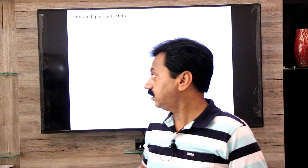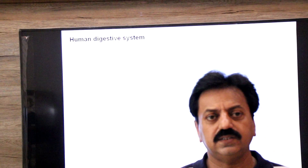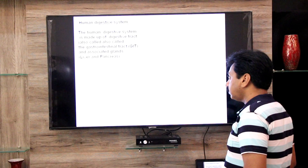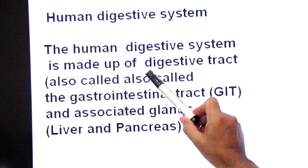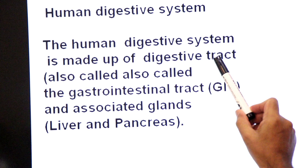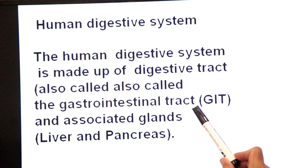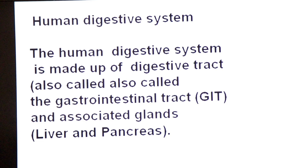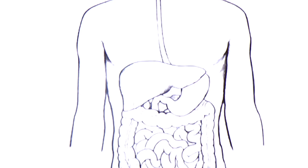Assalamu alaikum, namaste, hello dear students. Yesterday we discussed the digestive system of cockroach. Today we are going to start the most important topic of this chapter: the human digestive system. The human digestive system has two parts — one is the digestive tract, and number two, associated digestive glands. The digestive tract is also called GIT, gastrointestinal tract, and the associated glands are the liver and pancreas.